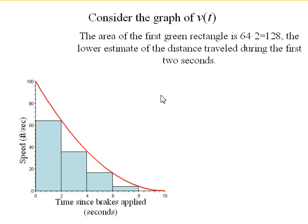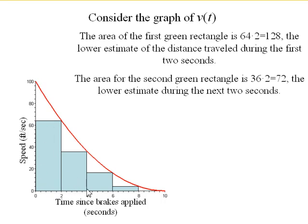The area of this first rectangle is 64 feet per second times the 2 seconds, so 64 times 2. The area of this next rectangle is 36 times 2. So on and so forth.